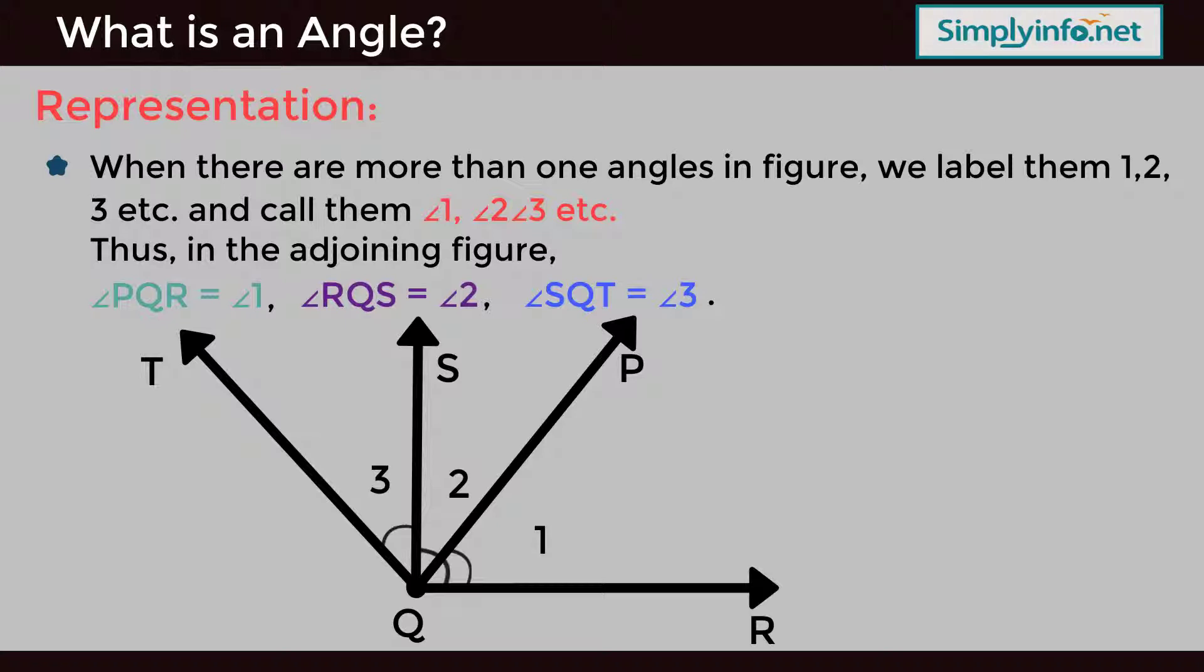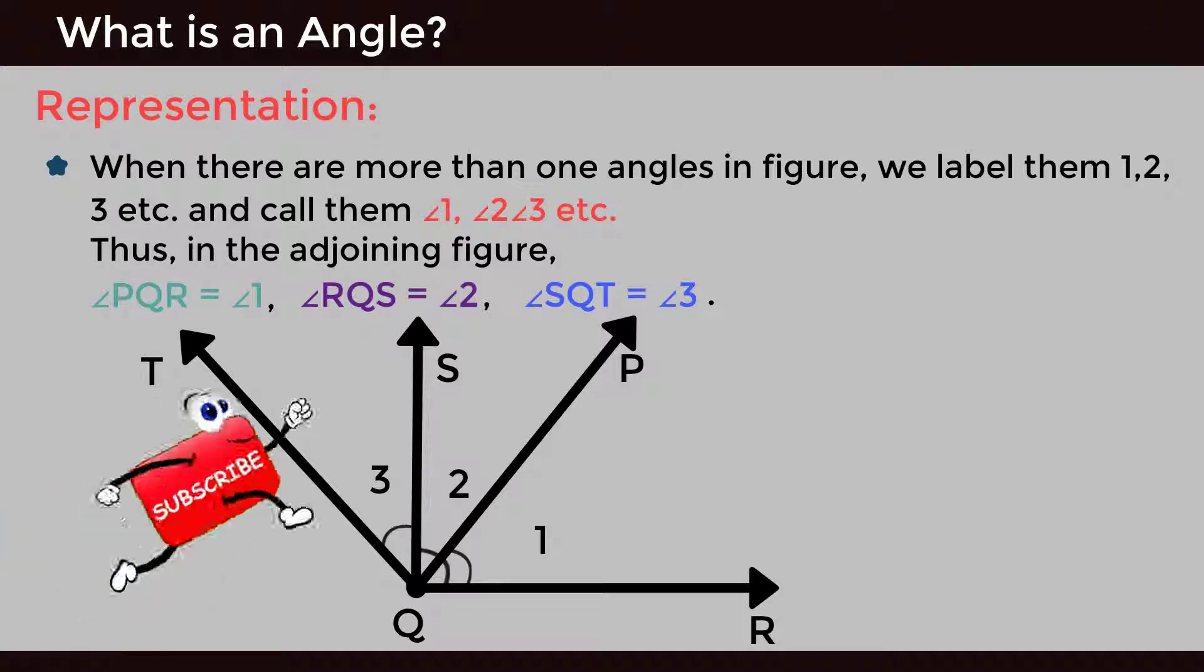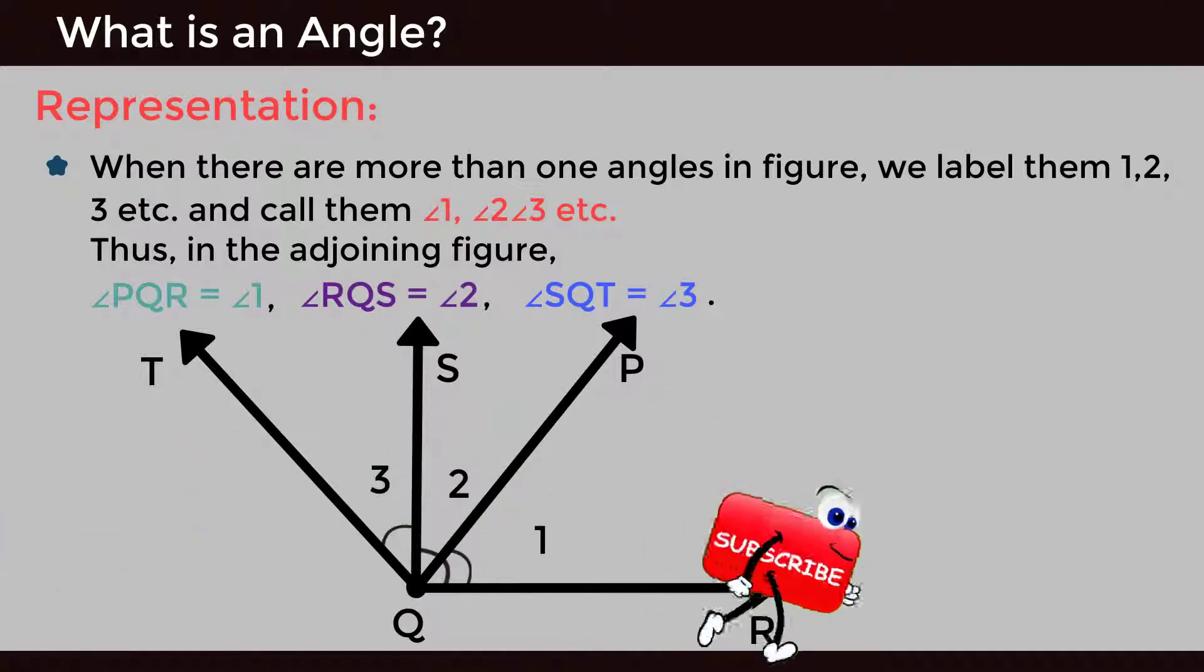Thus, in the adjoining figure, angle PQR is equal to angle 1, angle RQS is equal to angle 2, and angle SQT is equal to angle 3.